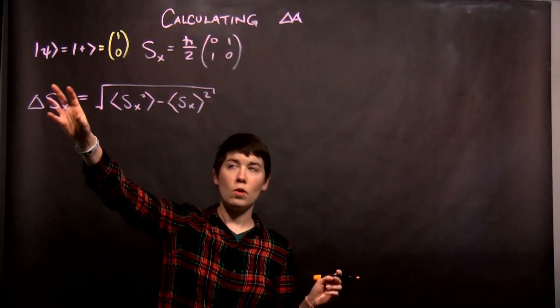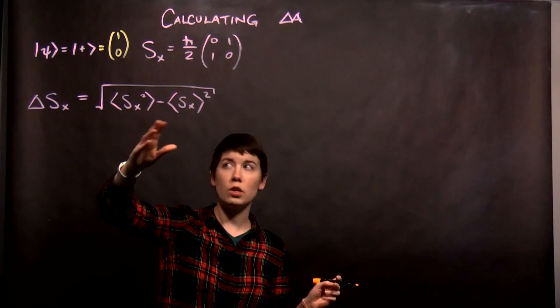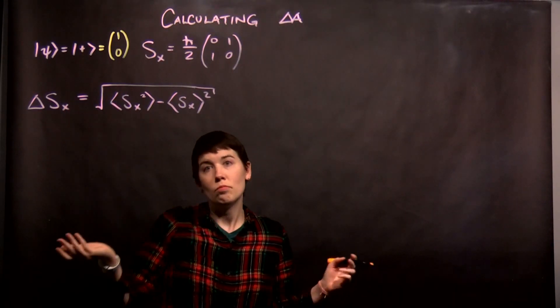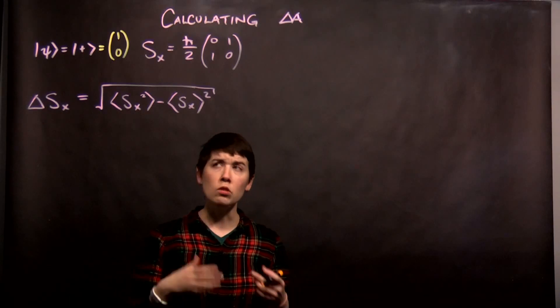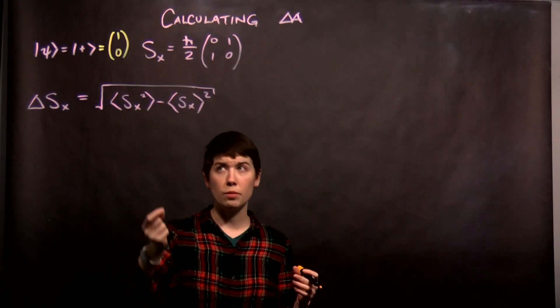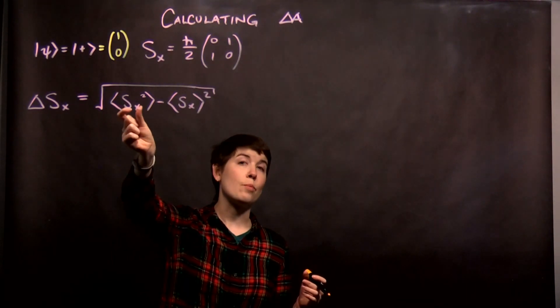So this is the definition, right? This is the equation that's going to define what our uncertainty is for an operator and we're talking here about this spin X operator. So we have an expectation value and what I would recommend as a starting point is to calculate what this operator is.